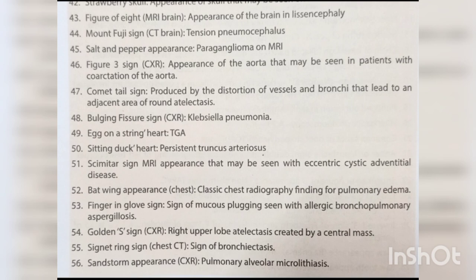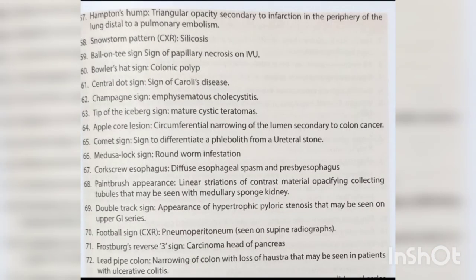Signet ring sign — sign of bronchiectasis. Sandstorm appearance — pulmonary alveolar microlithiasis. Hampton's hump — triangular opacity secondary to infarction in the periphery of the lung distal to a pulmonary embolism. Snowstorm pattern — silicosis. Ball-on-tee sign — sign of papillary necrosis on IVU. Bowler's hat sign — colonic polyp. Central dot sign — sign of Caroli's disease.